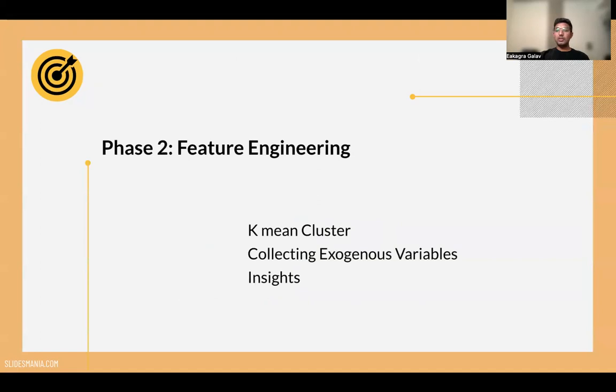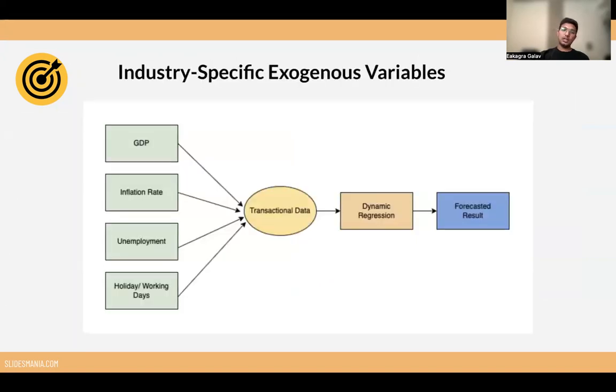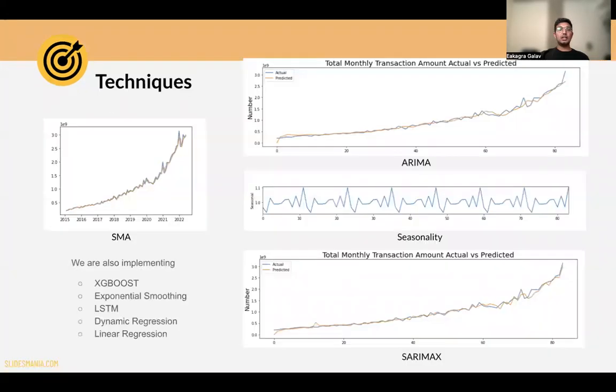In the feature engineering, we did k-means clustering and collected exogenous variables. This clustering is on the basis of recurring transactions. These exogenous variables we collected for our dynamic regression include GDP, inflation rate, employment, and number of working days.